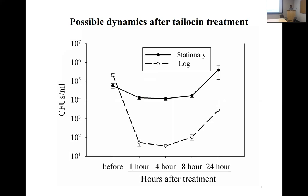One approach in the field would be to apply producer cells that actually produce the tailocins in situ. The major issue there is the economics of producing proteins at field scale — that's not going to be feasible in terms of cost. Alternatively, using producer cells means production happens specifically in locations where there is substantial pathogen growth that leads to invasion, rather than coating 90% of the surface area unnecessarily.